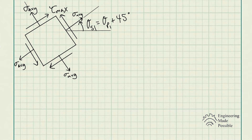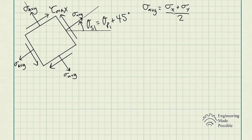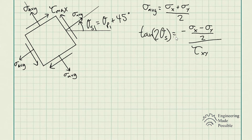The key difference: when we have the principal stresses, the shear stress equals zero. But when the shear stress is maximum, we do have a normal stress developed — specifically the average normal stress, which is sigma X plus sigma Y divided by 2. The equation for the angle of maximum shear stress is: tangent of 2 theta S equals negative (sigma X minus sigma Y) divided by 2, all divided by tau XY.